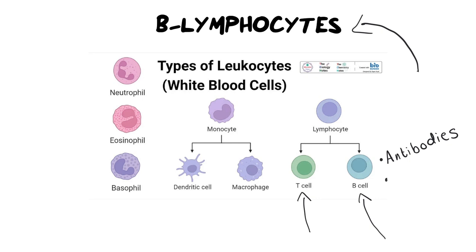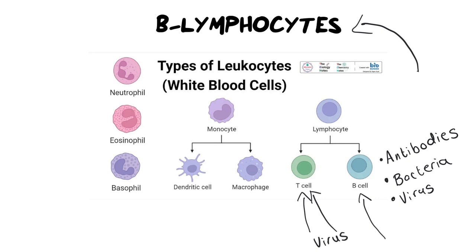Another really important aspect about B lymphocytes is they focus more of their attention on bacteria and anything that's floating in the blood — that's why it's important to remember that they're in the blood itself. They are unable, however, to determine if a cell is sick. That's where T lymphocytes come in. Generally speaking, T lymphocytes kill a viral infection inside cells, whereas B lymphocytes focus more on bacteria. However, if a virus is floating around in the blood, a B lymphocyte is also able to deal with that virus, but in a very different way.